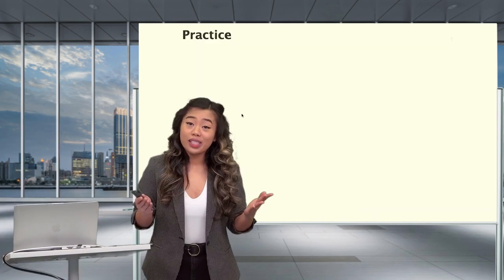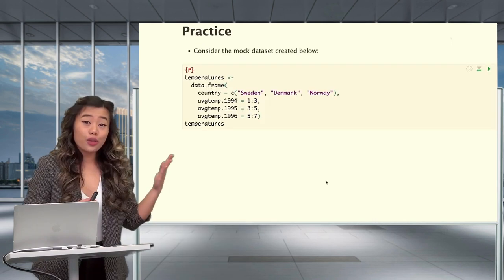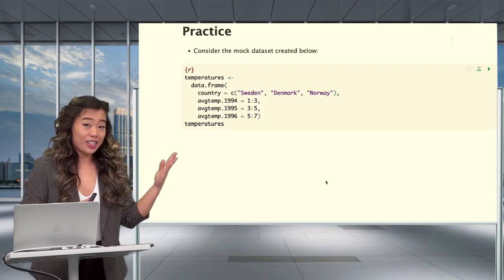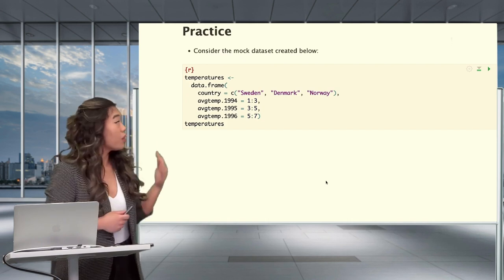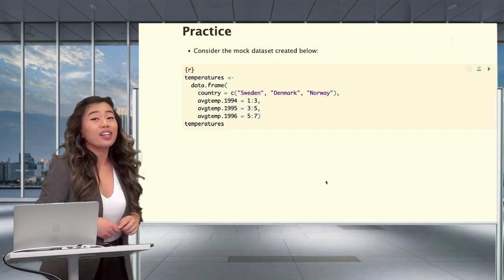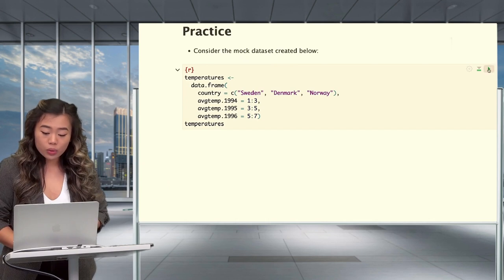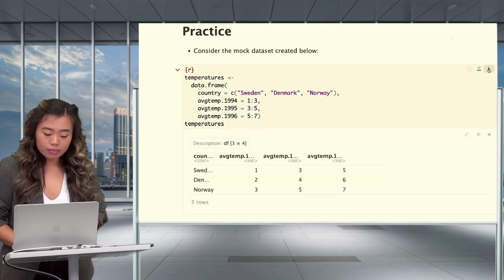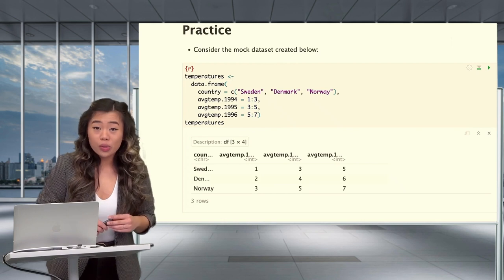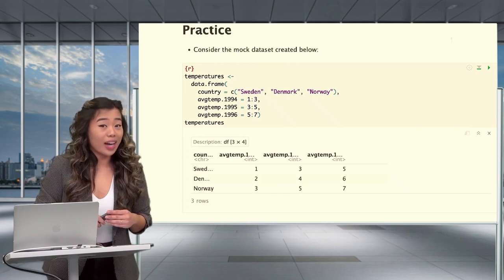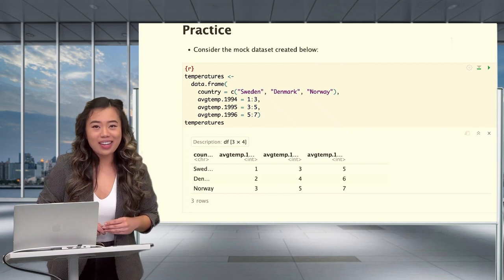Now that we've seen a few examples, it's time for a small practice exercise. Consider the mock data set where we measure temperatures for the countries of Sweden, Denmark, and Norway. When we run this code chunk and explore the output, are you able to identify if this is a wide or long data format? Take your time and answer.